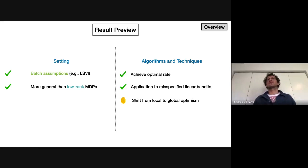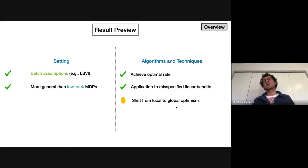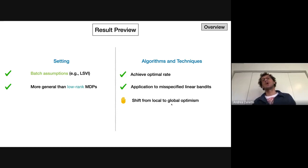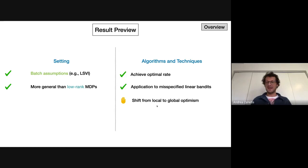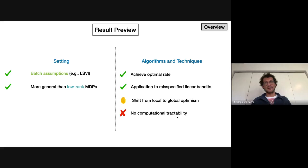Two key takeaways of this work are the last two bullet points. There is a shift from what we call local to global optimism. We can no longer be optimistic everywhere like traditional tabular exploration algorithms — we might need to be optimistic only at a given state. This simply reflects the fact that we have too many constraints and are not making enough assumptions to achieve optimism everywhere. The challenge is also reflected in the fact that we are not able to provide a polynomial time algorithm to ensure computational tractability, which is left for future work.